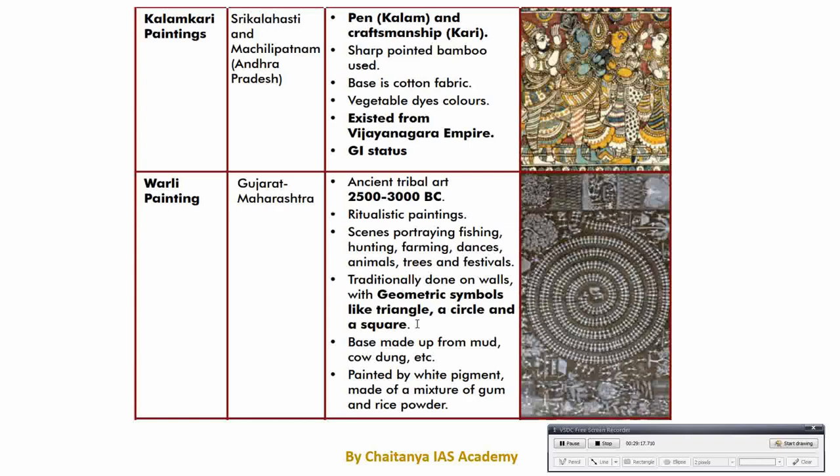Kalamkari painting is prevalent in Andhra Pradesh. Kalamkari means Kalam means pen and Kari means craftsmanship. This kind of painting is made on cotton fabric using vegetable dyes along with bamboo tools. It is prevalent during the Vijayanagara Empire period. Next is Warli painting, prevalent surrounding Gujarat and Maharashtra region. It is one of the ancient styles of painting, evidenced 3000 BC, and it is also a ritualistic painting. Hunting, farming, dancing, animals, trees, and festivals are major themes. Symbols such as triangle, rectangle, and square have also been used. A major unique feature is that the painting is made on a wall plastered with soil or cow dung, and above that gum or rice powder is used as a pigment. In this painting only white color is used.